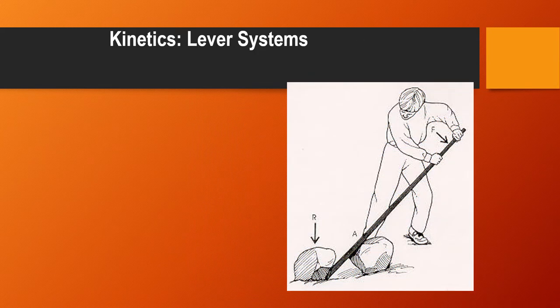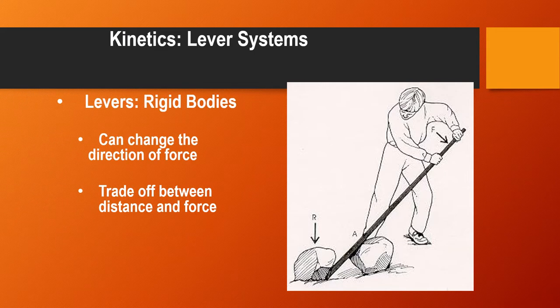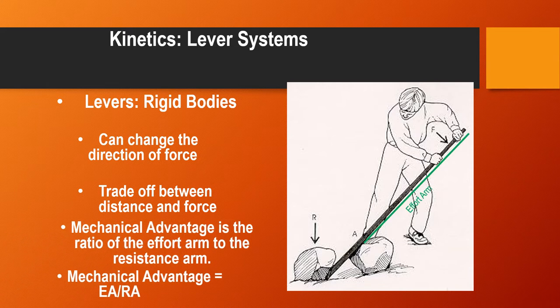So what is a lever, as we see with this drawing here on your right? A lever has three elements. It's a rigid body that can change the direction of force, and there's a trade-off between the distance and the force in most cases. Mechanical advantage is a way that we describe levers. Mechanical advantage is the ratio between the effort arm and the resistance arm. The effort arm is what is in between the fulcrum — in this case, a rock — and the distance between the axis and his hands.